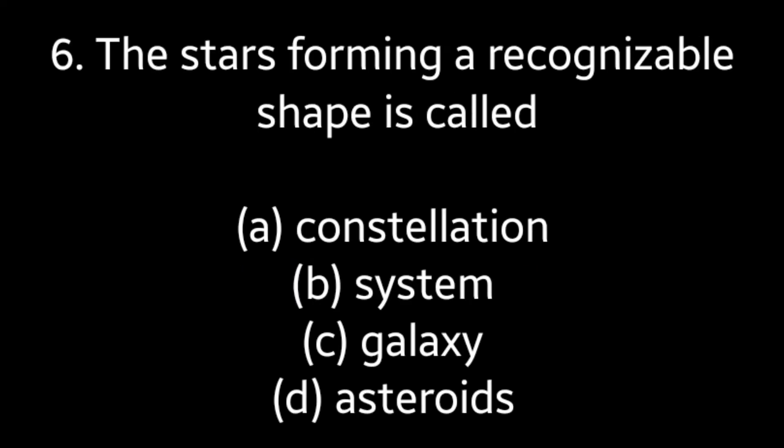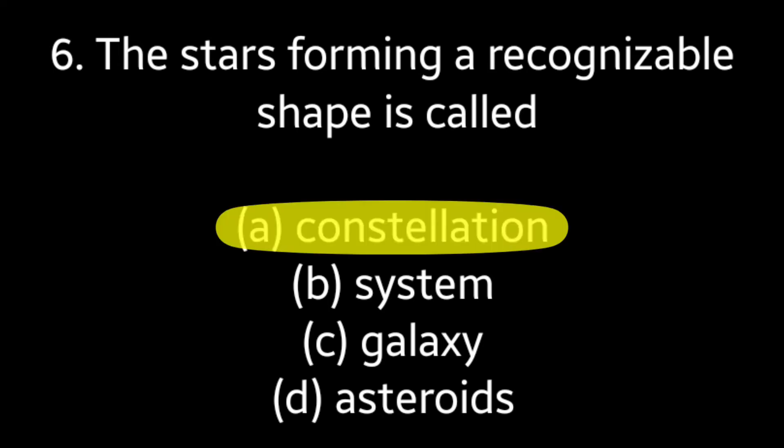Question number 6: The stars forming a recognizable shape is called — Constellation, System, Galaxy, Asteroids. Answer is option A — Constellation.